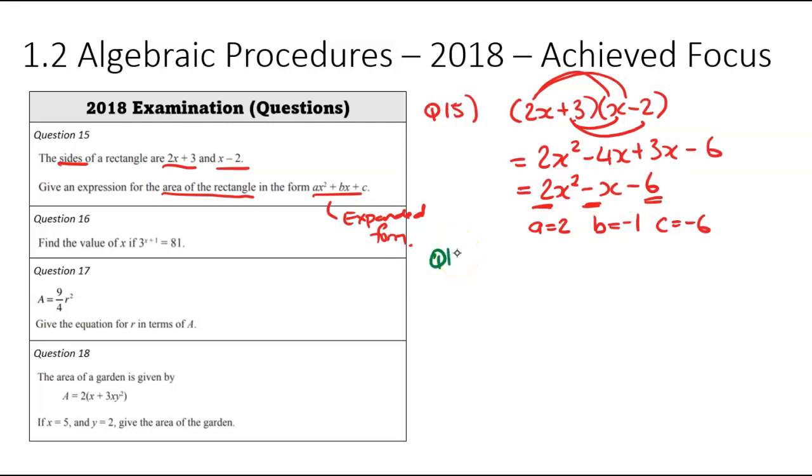We're now moving on to question number 16. Find the value of x for 3 to the power of x plus 1 equals 81. So 3^(x+1) equals 81. The trick with this question is to change 81 to 3 to the power of something. So just working through that: 3 to the power of 1 is 3, 3 squared would have been 9, 3 cubed would have been 27, and 3 to the power of 4—that's where we get our 81.